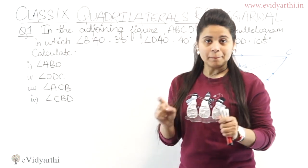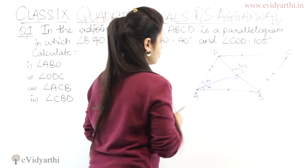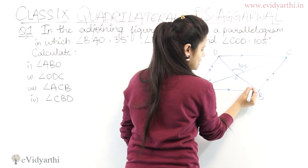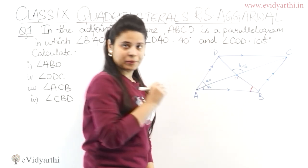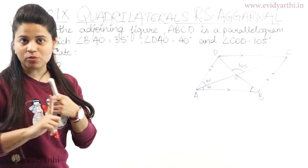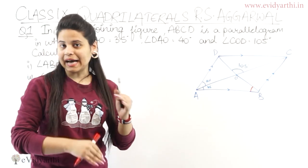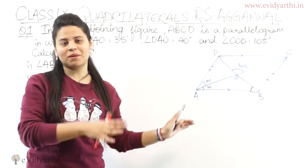The first one is ABO. So first we have to find angle ABO, which means we have to find this angle. Now we have a parallelogram with parallel lines and their properties. When they are parallel, we will apply the alternate angles and all the properties here.